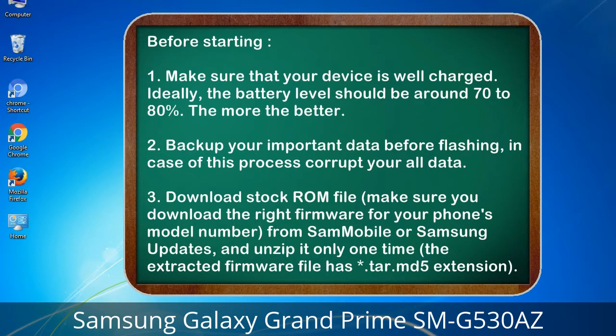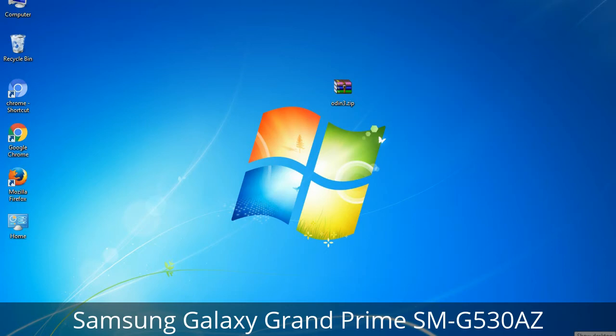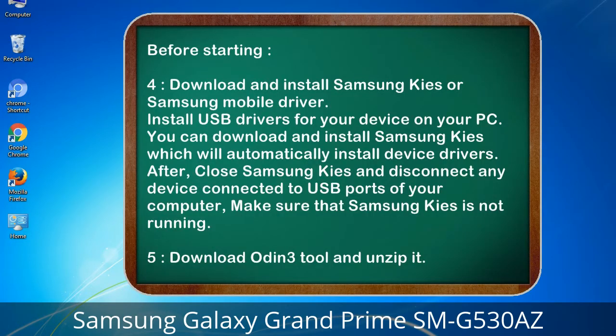Make sure you download the right firmware for your phone's model number. Download from Sammobile or Samsung updates, and unzip it only one time. The extracted firmware file has a *.tar.md5 extension. Download and install Samsung KIES or Samsung mobile driver to install USB drivers for your device on your PC. Samsung KIES will automatically install device drivers. After that, close Samsung KIES and disconnect any device connected to USB ports of your computer. Make sure Samsung KIES is not running. Then download Odin3 tool and unzip it.